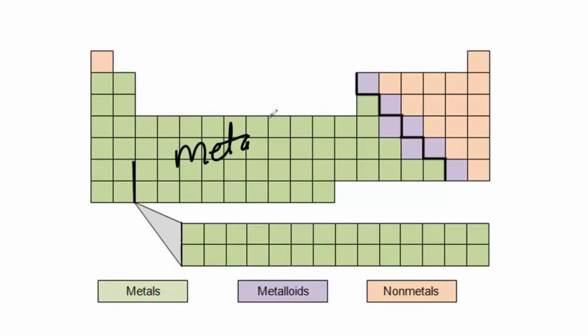And they tend to live on the left side of the periodic table. These non-metals are on the right side of the periodic table, with the exception of hydrogen. Hydrogen ends up being a special case, and so we don't really know exactly what to do with them. So for right now we'll call them a non-metal.